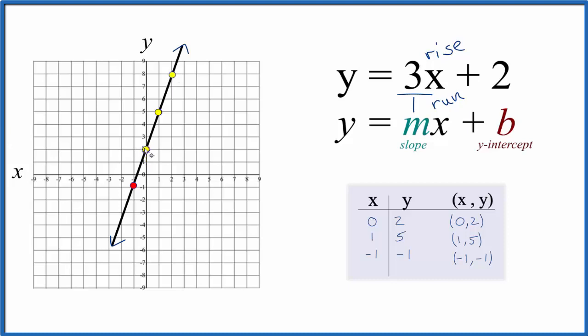Likewise, I could go in the opposite direction. I could go down 3, 1, 2, 3, and over 1. Keep going, and you see that all of these are falling on the line.